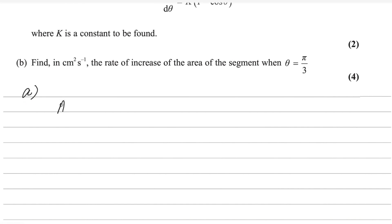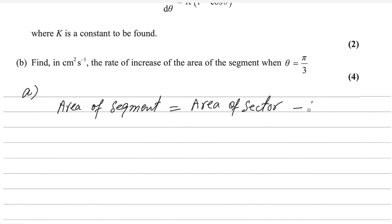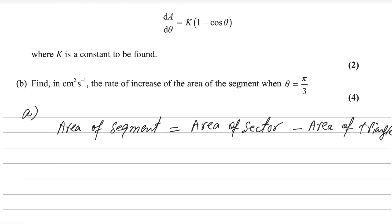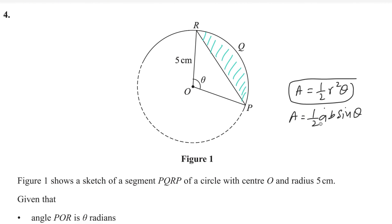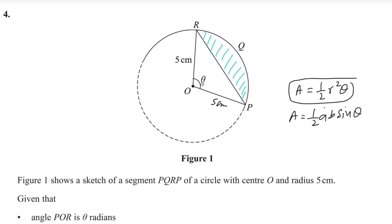First part: area of segment equals area of sector minus area of triangle. The area of sector formula is A = (1/2)r²θ. The area of triangle formula is (1/2)AB sinθ, where A and B are the sides containing angle θ. Here both sides are radii of 5, so we use 5 and 5. Theta is not given numerically, so we keep it as θ.